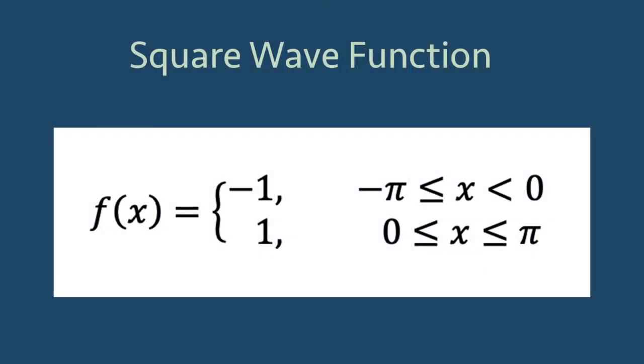The mathematical representation of a square wave is a piecewise continuous function that can be written as f(x) = -1 where x is between negative pi and 0, and f(x) = 1 when x is between 0 and pi.